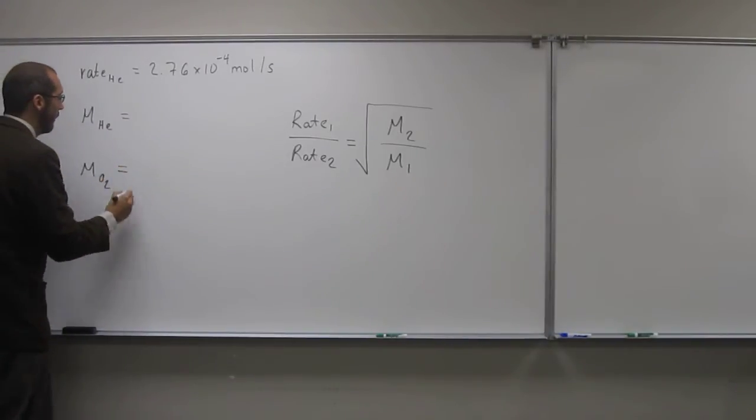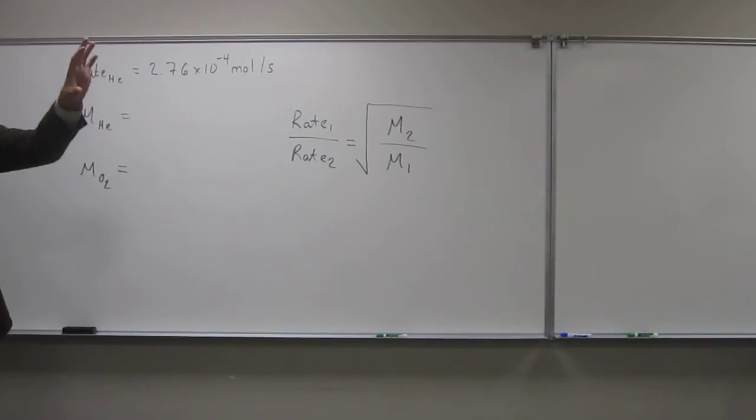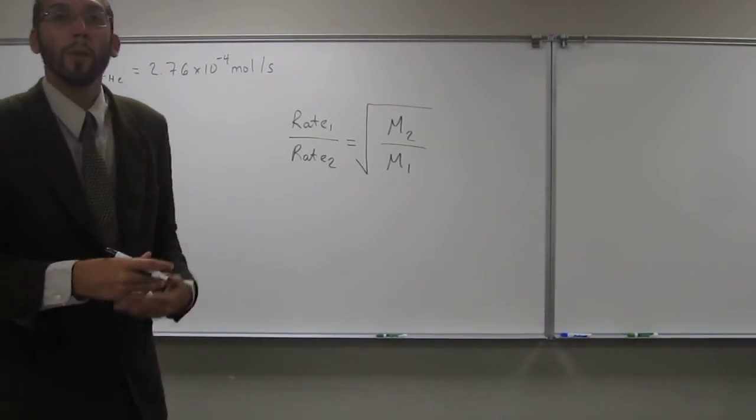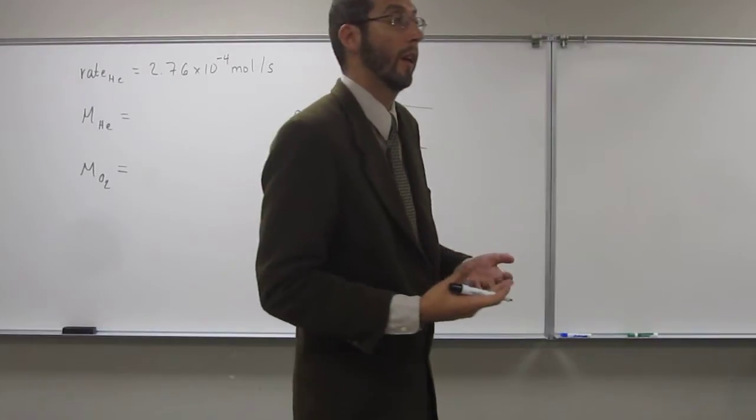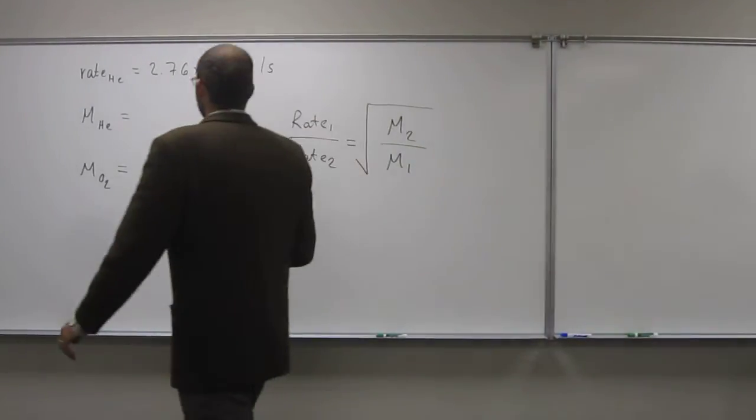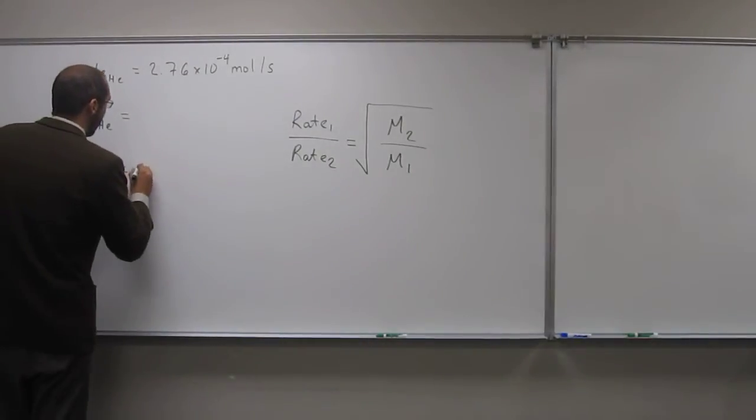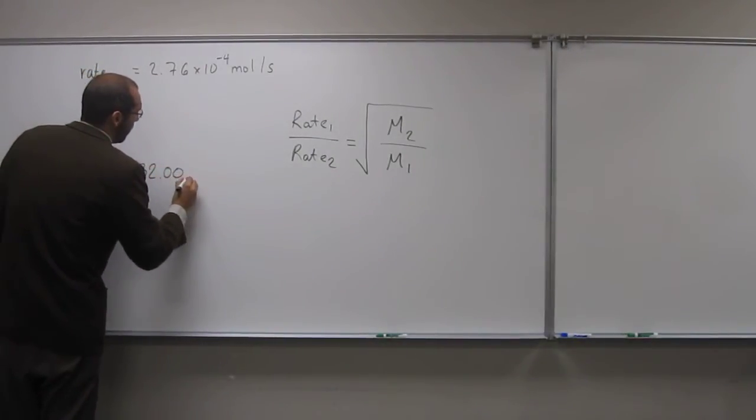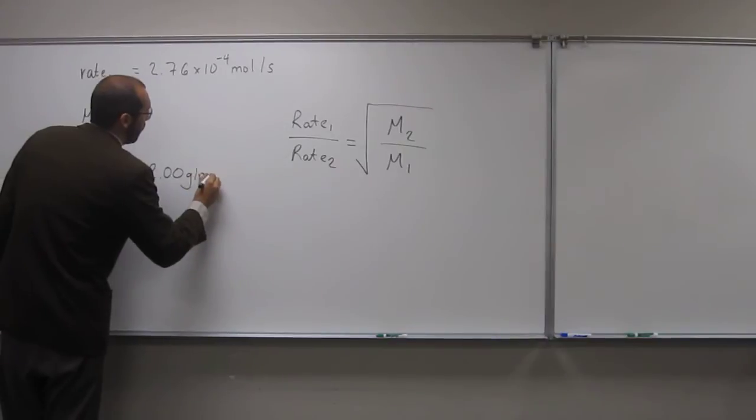So, if we forget that and we put just 16 from the periodic table, we're not going to get the correct answer. So, oxygen's diatomic, so it's going to be 2 times 16. We get that number from the periodic table, 32.00 grams per mole.